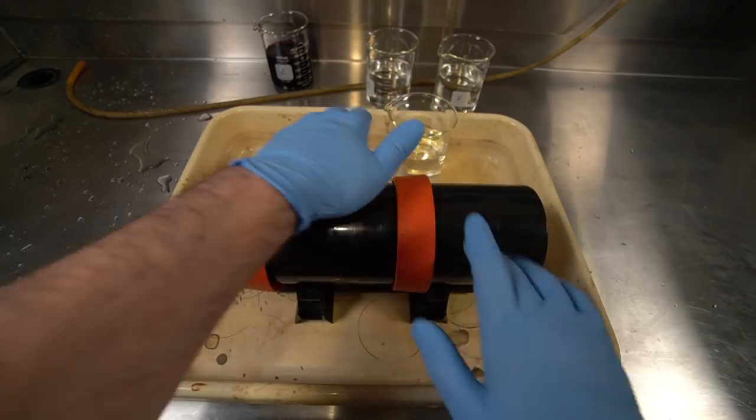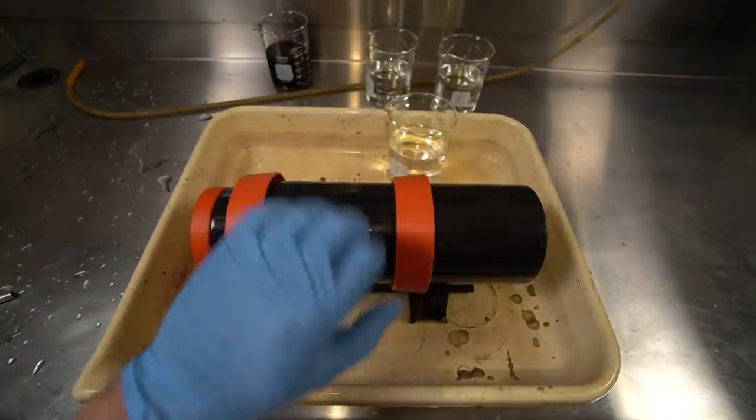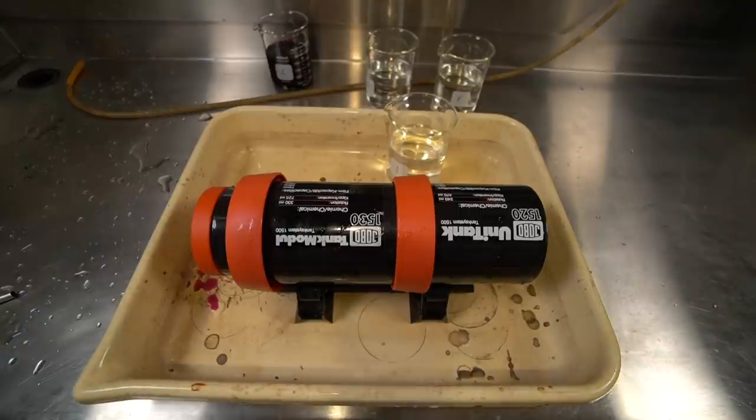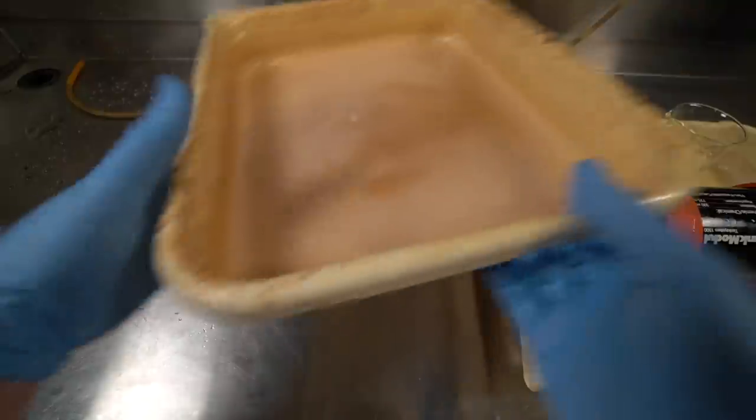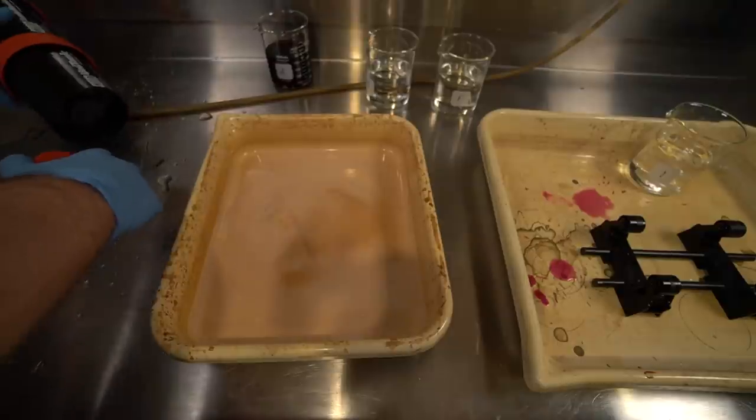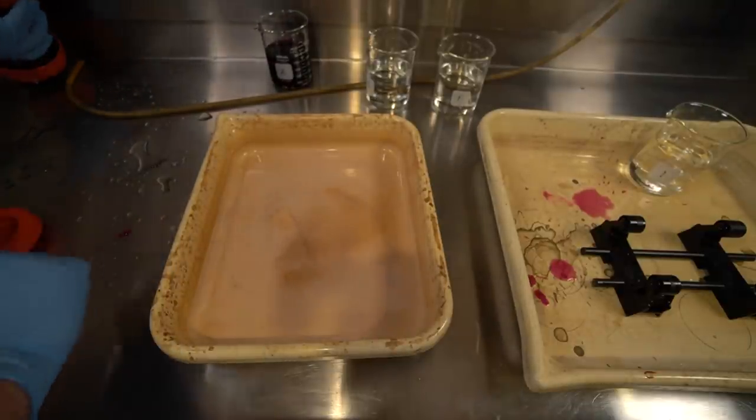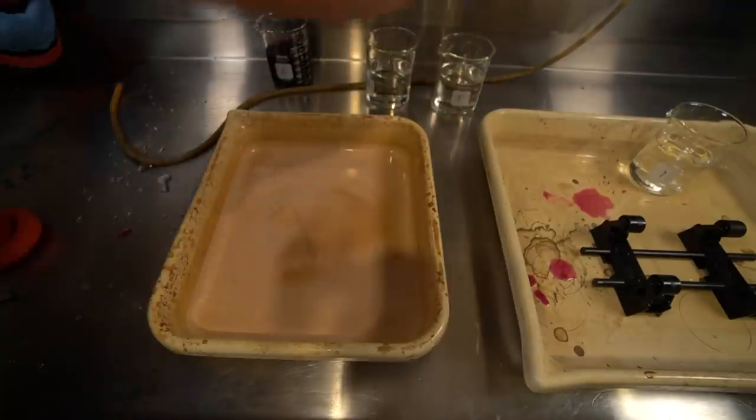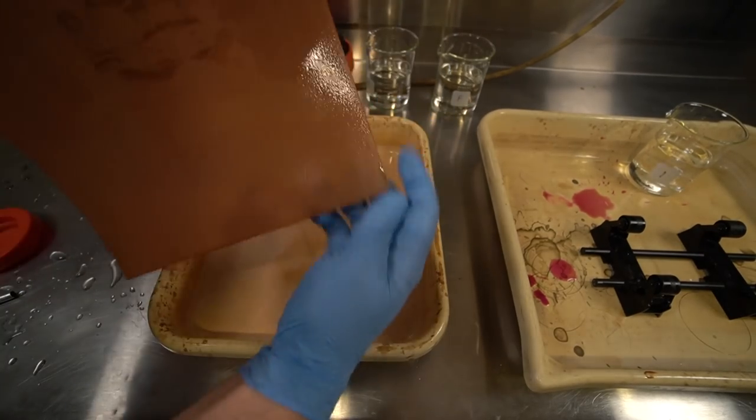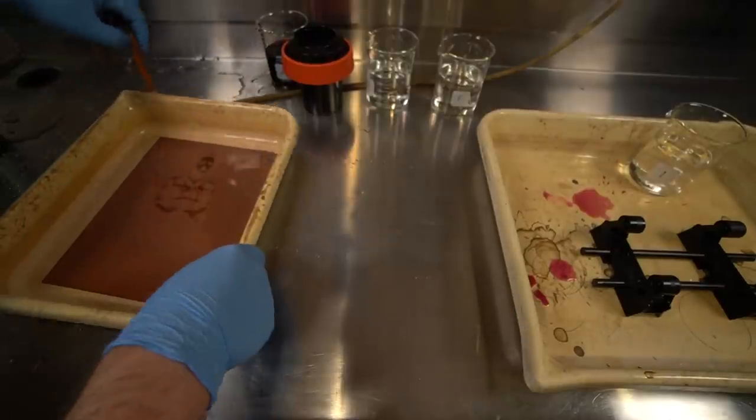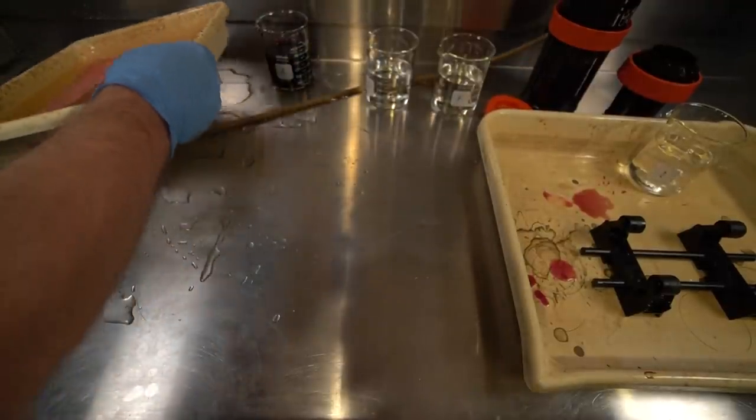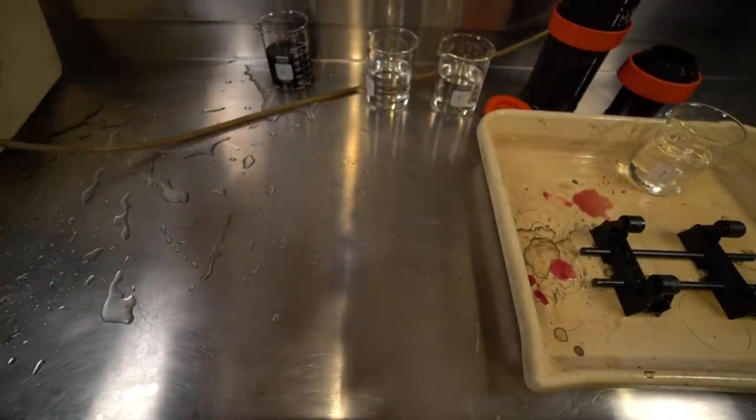So let me grab a tray here. Here we go, you're going to swap. Pour out the bulk of our waste. Here's our film and we're going to do water rinse. Now let's just rinse off the bulk of our bleach.